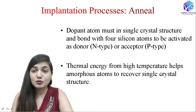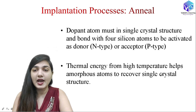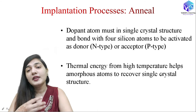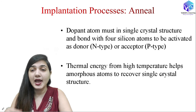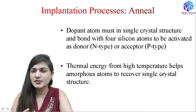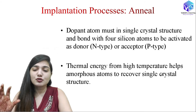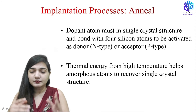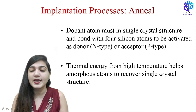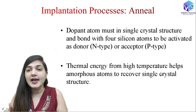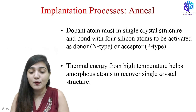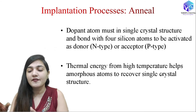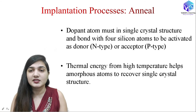Now coming to the annealing process — annealing is the recovery process. We have a damaged surface and we want to recover the actual surface from it. We use high temperature as the annealing process — around 600 to 1100 degrees Celsius. The dopant atom must be in the single-crystal structure and bond with four silicon atoms to be activated as donor (n-type) or acceptor (p-type). If we have an amorphous structure this is very less likely, so the thermal energy from high temperature helps amorphous atoms to recover and again become the single-crystal structure.